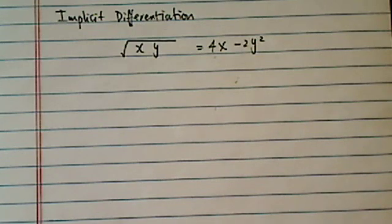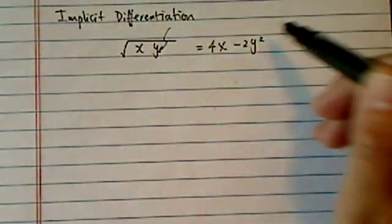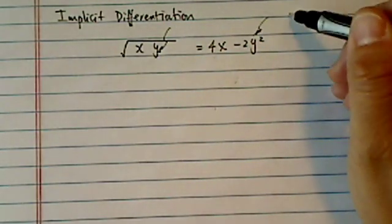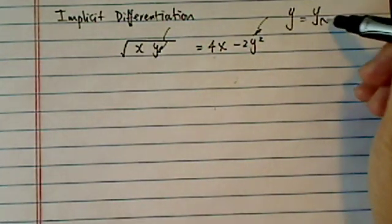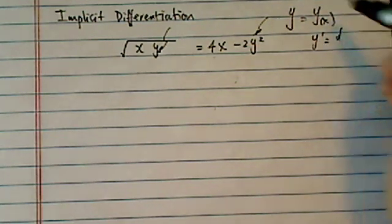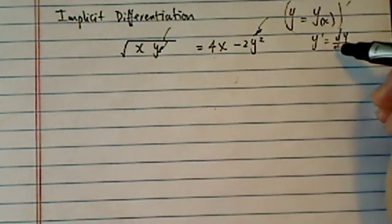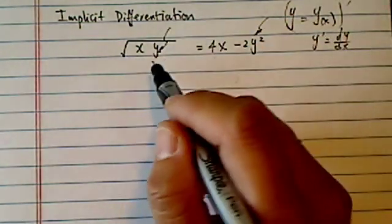Implicit differentiation is not hard, it's just really tedious. One trick you have to remember is that function of y, treat y as a function of x. So y prime becomes, when you take derivative of this one, you do have to, y becomes dy/dx. It gets clear once we start doing it.